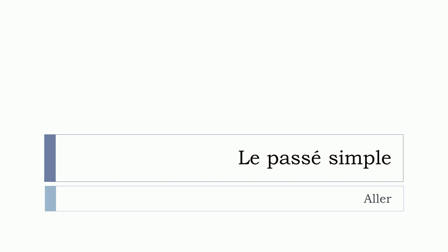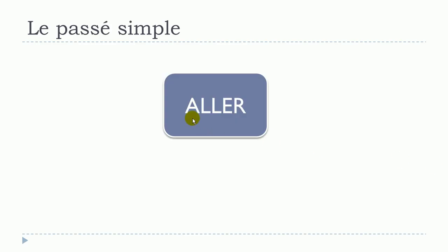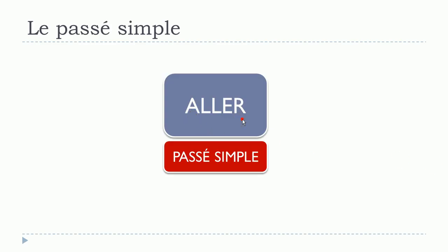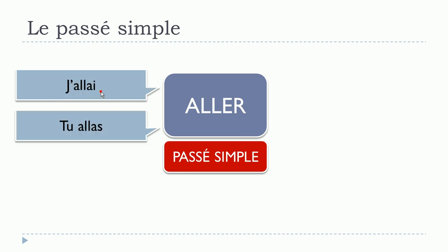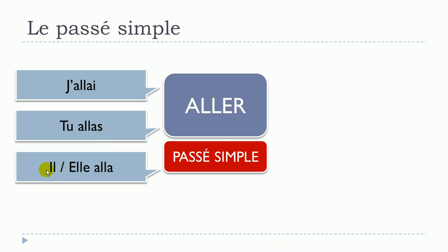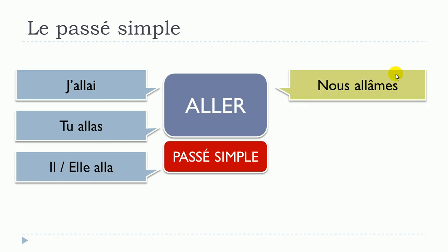Let's see le verbe aller au passé simple: j'allais, tu alla, il alla, elle alla, nous allâmes, vous allâtes, ils allèrent, elles allèrent.